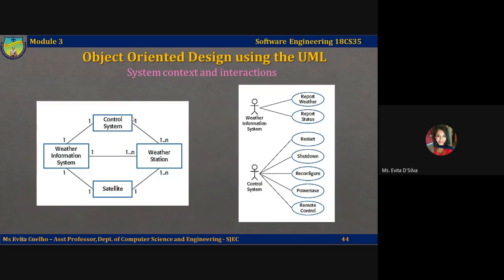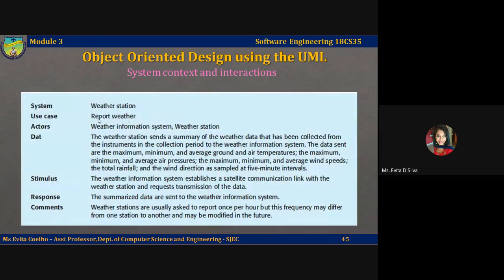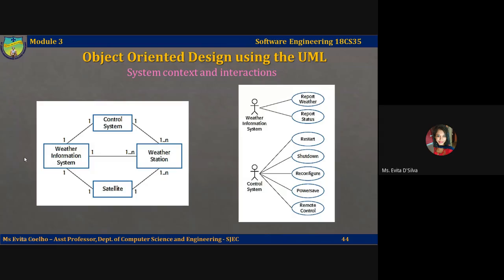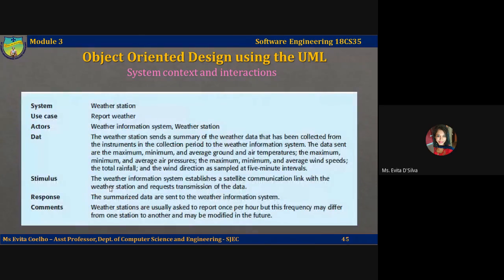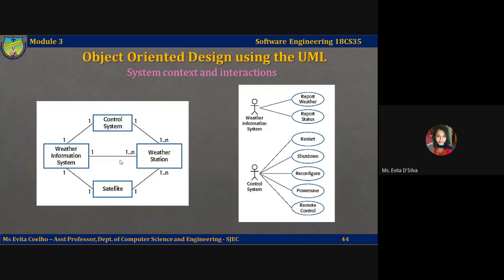The system is weather station. The use case being described is 'report weather.' The actors involved are the weather information system and the weather station. The stimulus is the weather information system establishes a satellite communication link with the weather station and requests transmission of data — this is the trigger the use case has to receive. When it receives the trigger, the response will be the summarized data that will be sent to the linked weather information system. This is the data being computed, collected, and filtered. In this way, you can write a structured description for every use case shown in the diagram.